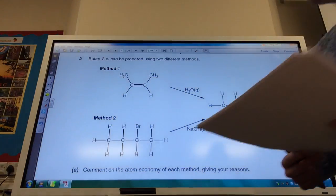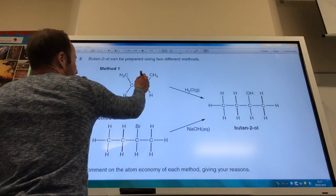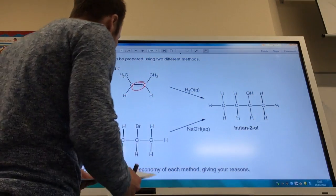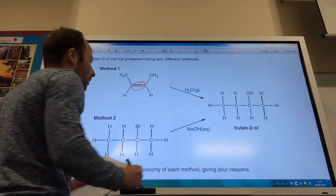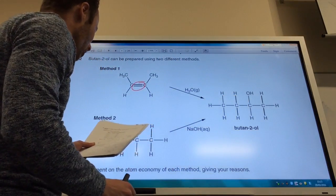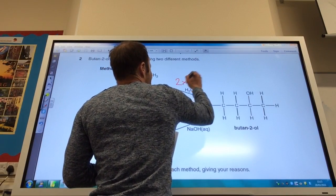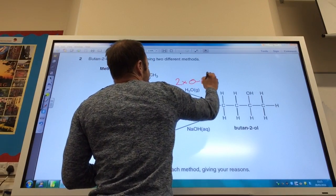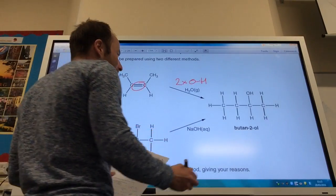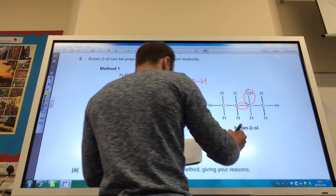The bonds broken if you are going from here to here—because you're obviously breaking that one there. Your carbon-carbon double bond because you haven't got it there. And also your two times OH bonds for water as well. And you are making that bond, that bond, the OH bond as well there and the CH bond there as well.